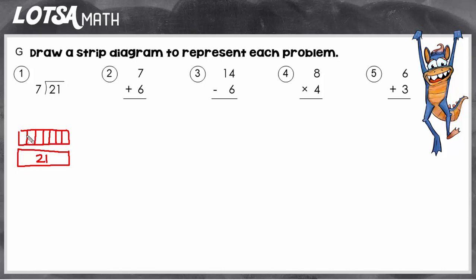The last number that I have is the unknown — what we don't know — and that's what's going to go in each box, because in each of the 7 groups there's a certain number. In this case, it's 3 because 3 sevens make 21.